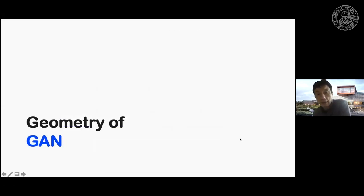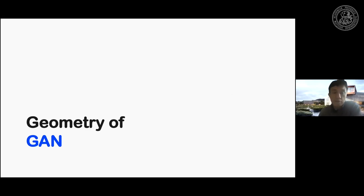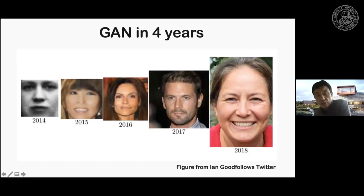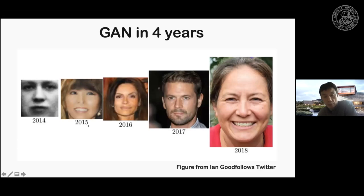Based on this brief introduction to optimal transport, we'll discuss the geometry of GAN and cycle GAN, which is the main platform we use for unsupervised learning for image reconstruction. As you know, GAN is a very important area of machine learning research. Since it was first proposed in 2014, within just four years we can generate very realistic, large-scale images.